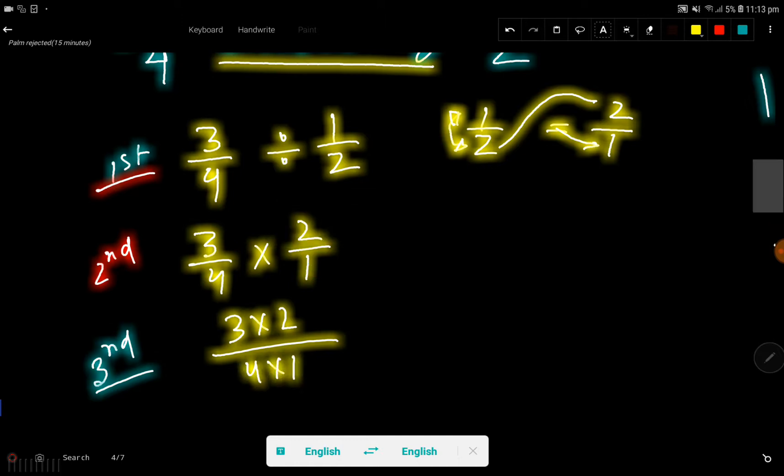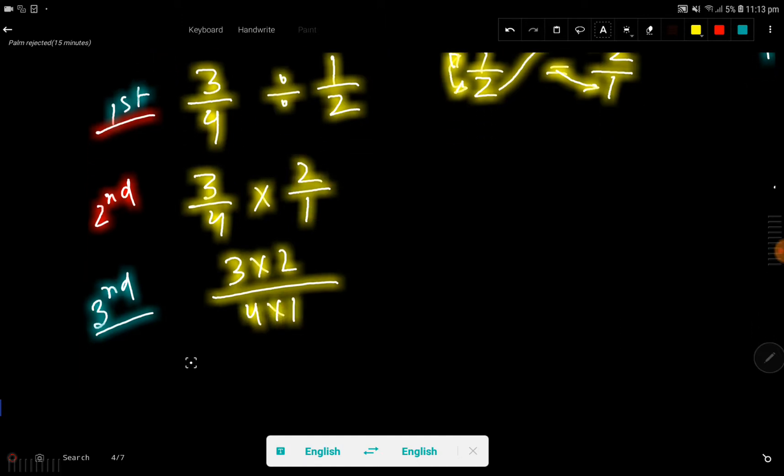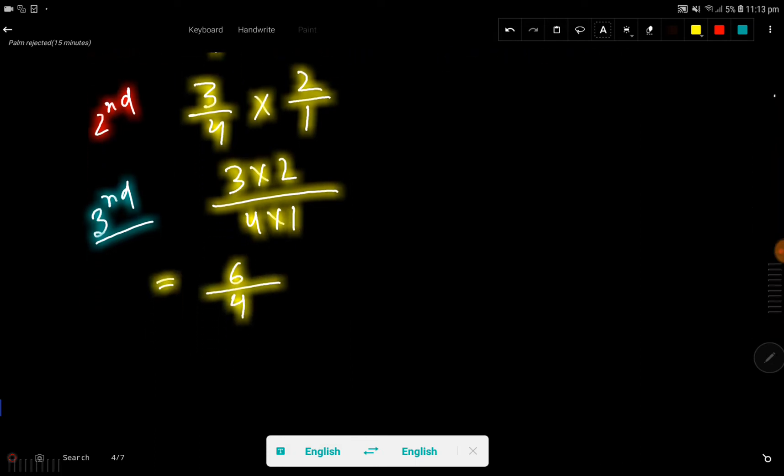So basically you are getting here 3 times 2, which is 6, divided by 4. Okay, if you divide this 6 by 2, then you are getting 3 and you are getting 2. 3 over 2, this is the simplest form.